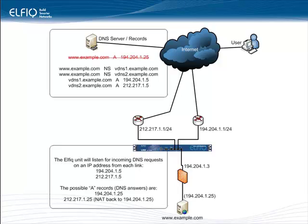We've also made some modifications to the externally hosted DNS records — this is an important step for iDNS to work. We used to have an A record which would define www.example.com to an IP address of 194.204.1.25. The requirement is to eliminate that A record and instead create a subzone or subdomain with the same name as the host section of the previous A record fully qualified domain name. So instead of having an A record for www.example.com, we will have a subzone called www within example.com. That subzone is delegated to two name servers: vdns1.example.com and vdns2.example.com.